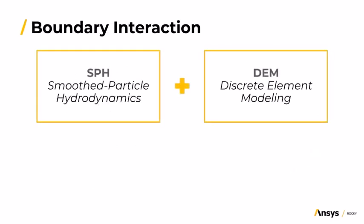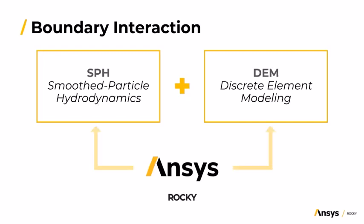Now let's get into SPH and DEM. ANSYS Rocky's SPH approaches the interaction of fluid and boundaries by using a DEM-style interaction. The triangle-based approach is favorable for complex particle shapes, providing more accuracy between fluid elements and boundaries.